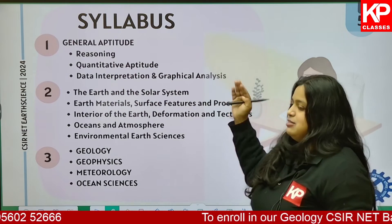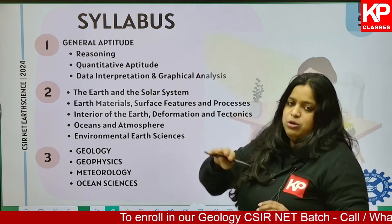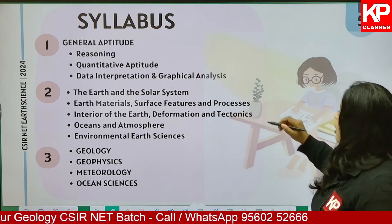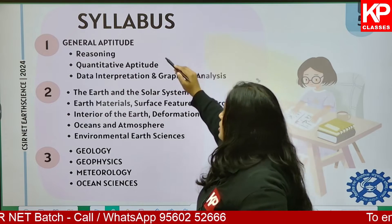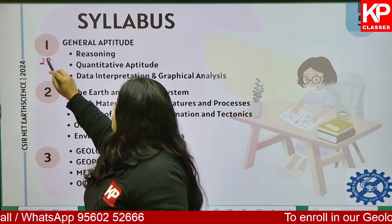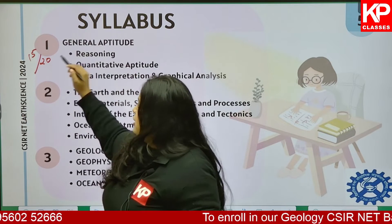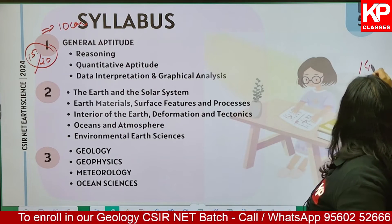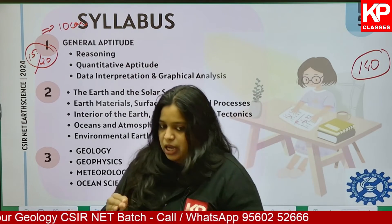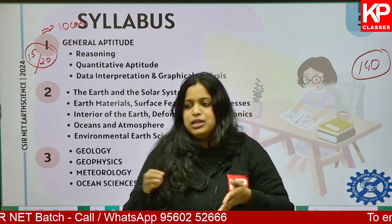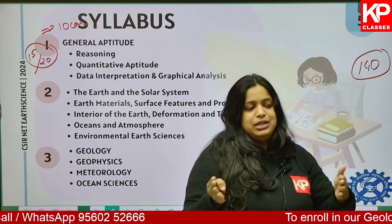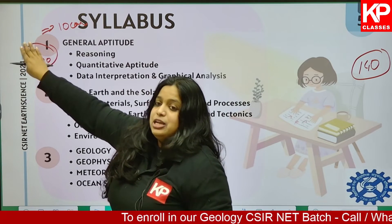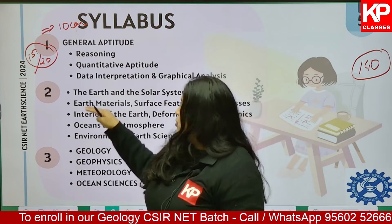Part A is general aptitude — it consists of reasoning, quantitative aptitude, data interpretation, graphical analysis, etc. You have to be very thorough with the general aptitude section because out of 15 attempted questions, 10 should be correct. In Part A there are 20 questions total, you can attempt 15, and out of those 15, there should be at least 10 correct answers — that's why I targeted the 140 score.